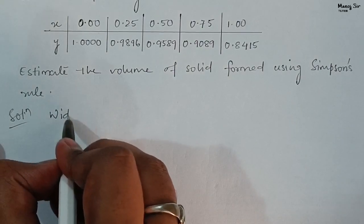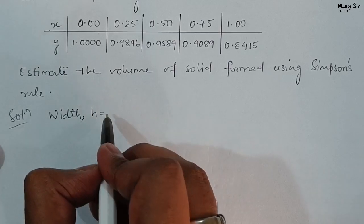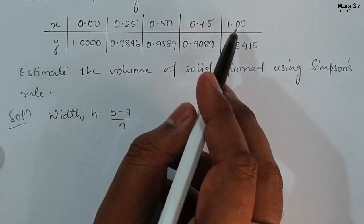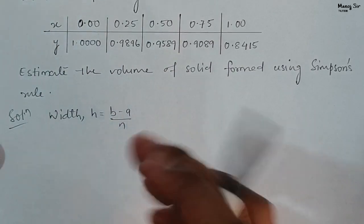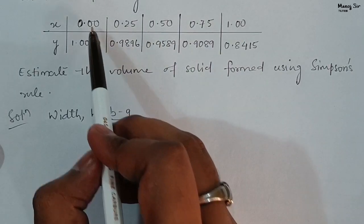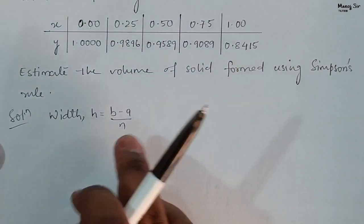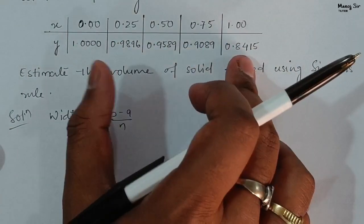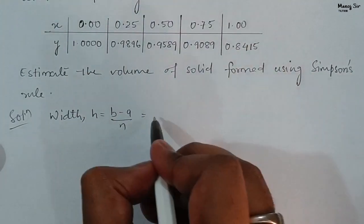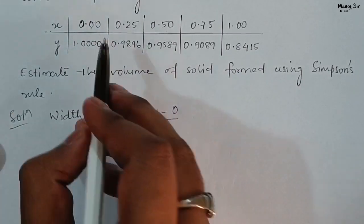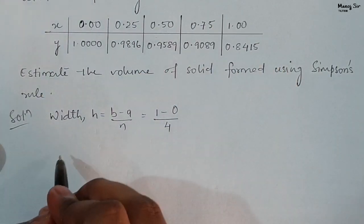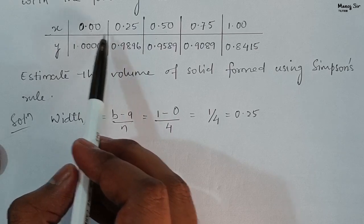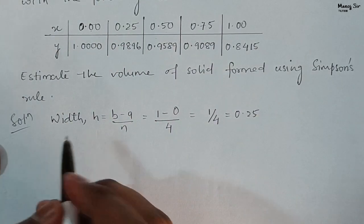The width h is given by the formula h = (b - a) / n. Here b is the upper limit = 1, a is the lower limit = 0, and n is the number of steps. We have 5 elements, so n = 5 - 1 = 4. Therefore h = (1 - 0) / 4 = 1/4 = 0.25.